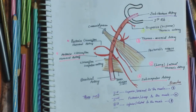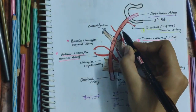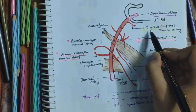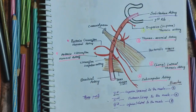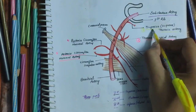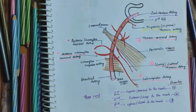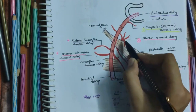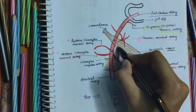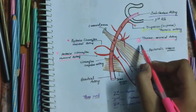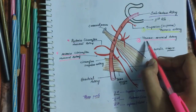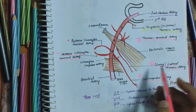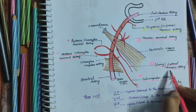The first part gives one branch: the superior thoracic artery. The second part gives two branches. The first branch is the thoracoacromial artery, and the second branch is the long or lateral thoracic artery.